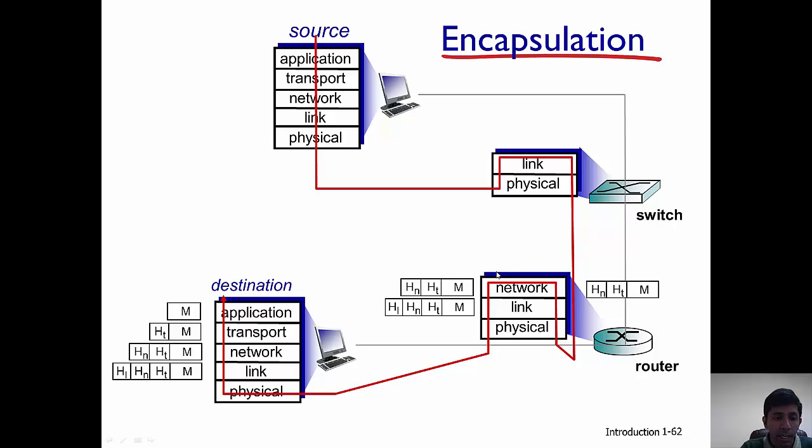Another important thing to note here is that only the end hosts have all five layers implemented. For example, the end hosts here, the source and destination, have all five layers starting from the application all the way to the physical. We will see as we move along this course that routers, which are hosts within the internet...